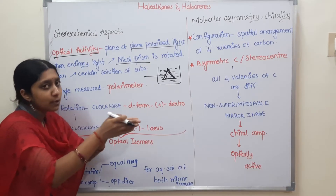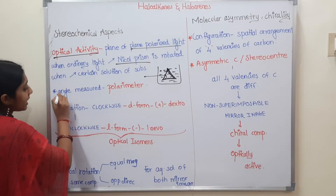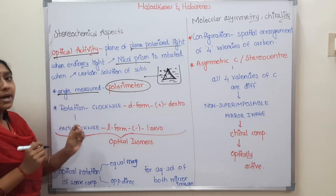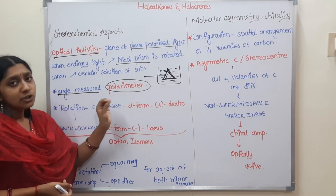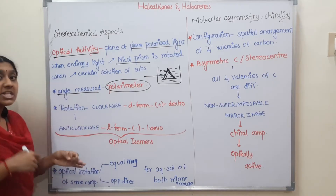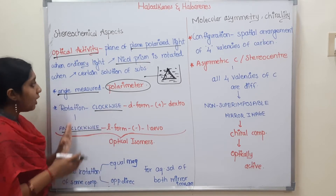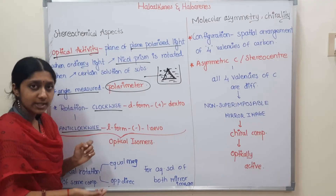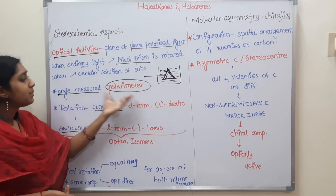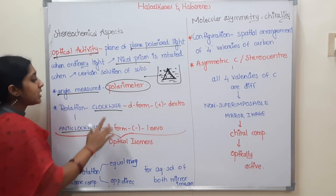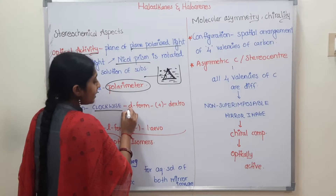When plane polarized light passes in one direction through the solution, it will rotate by an angle. How can we measure that angle of rotation? Using a polarimeter. Just to clarify the concept — what is this rotation? Is it clockwise or anticlockwise? This is an important point. The light will be polarized in the Nicol Prism and it will rotate in the solution. If it rotates, we measure it with a polarimeter. The rotation is clockwise and the light rotates — the solution is said to be dextrorotatory.